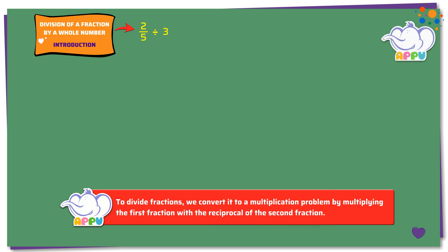We write this as 2 by 5 divided by 3 by 1. Then we multiply the fraction with the reciprocal of the second fraction.